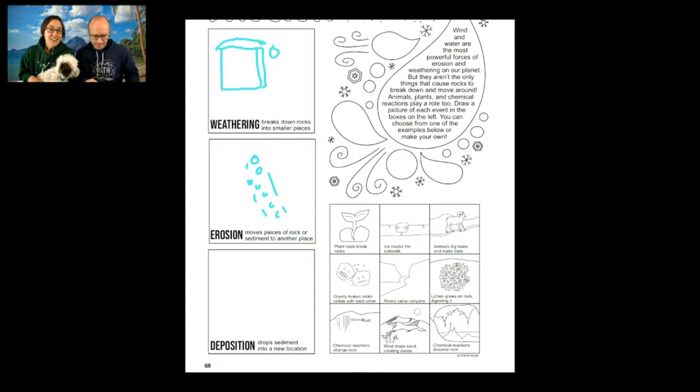Rivers are a great way for sediment to move — they carry it along. We're going to talk about a couple of different examples of erosion and weathering, but water and wind are the best.